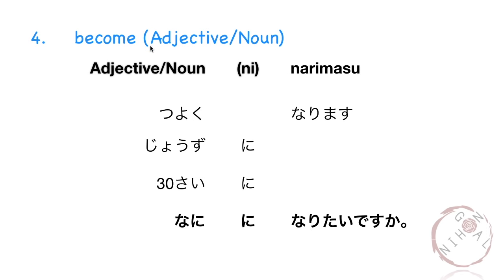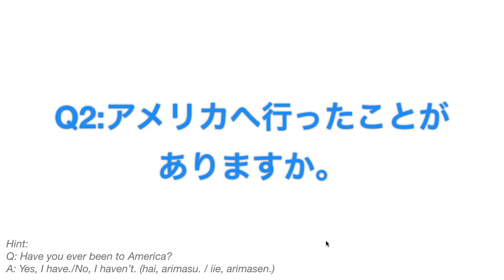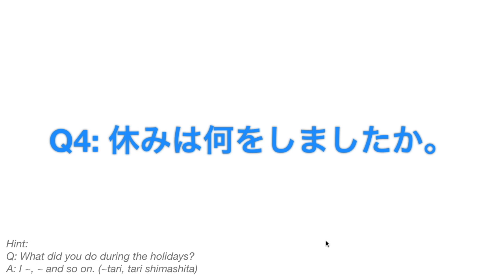We've also learned to express becoming an adjective or noun. For example: tsuyoku narimasu, jouzu ni narimasu, sanjussai ni narimasu. You can also ask questions like nani ni naritai desu ka — meaning what do you want to be or become? For conversation practice: Sashimi wo tabeta koto ga arimasu ka? Shuumatsu wa nani o shimasu ka? Yasumi wa nani o shimashita ka? Anata wa nani ni naritai desu ka? Feel free to answer anything you want.